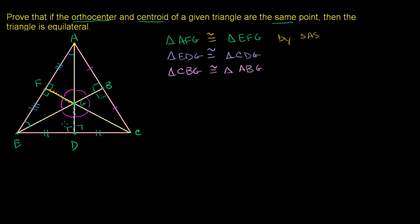All six of these smaller triangles have a 90 degree angle and a magenta angle. So the remaining angle must be 180 minus 90 minus the magenta angle, which equals 90 minus the magenta angle — that's the blue angle. Since two of the angles are the same across all six triangles, the third angle must be the same as well. All six triangles share the same three angle measures: 90, magenta, and blue.